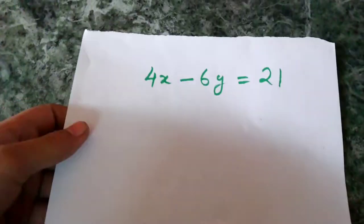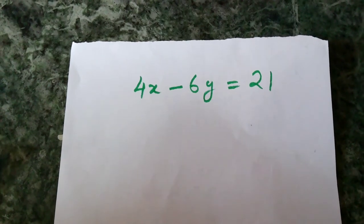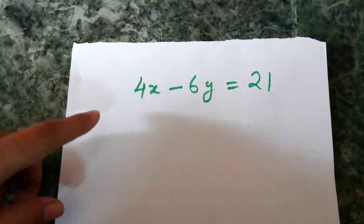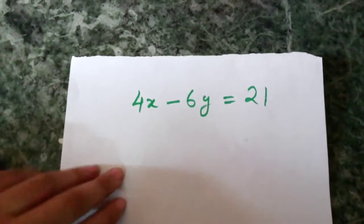Let us consider some examples. 4x minus 6y equals 21. It is a linear equation in two variables because it is in the form ax plus by plus c equals zero.